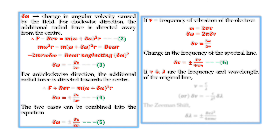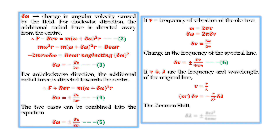If ν and λ are the frequency and wavelength of the original line, using ν = c/λ and the expression for Δν, the Zeeman shift is found to be: Δλ = ±Beλ²/4πmc. This is the final expression for the Zeeman shift.